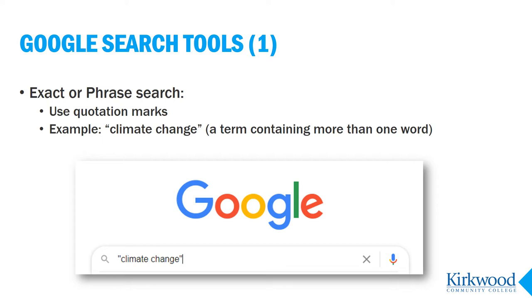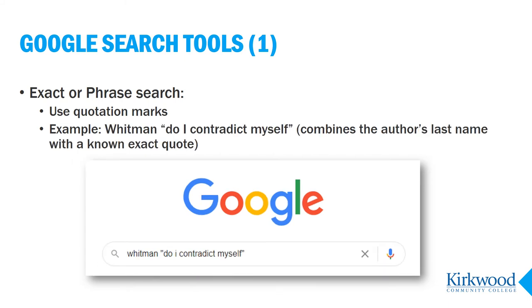So I might use quotation marks around a term that has more than one word, like "climate change." Or I might use it to find an article where I know the title or I know a specific line of text from it.